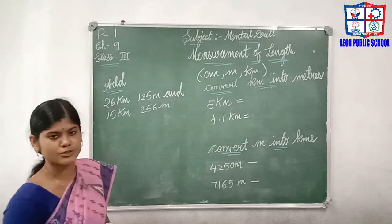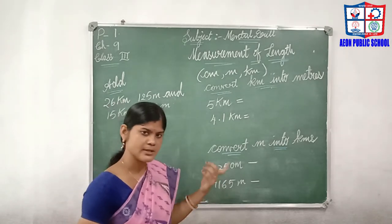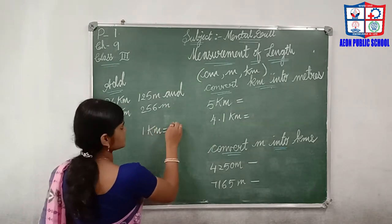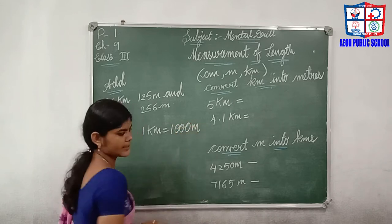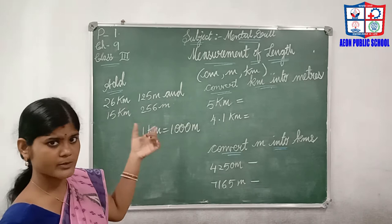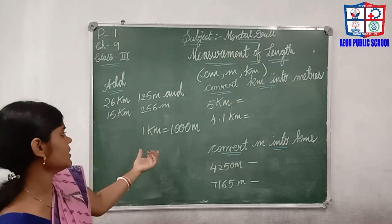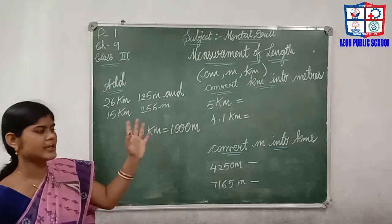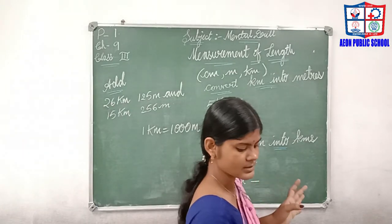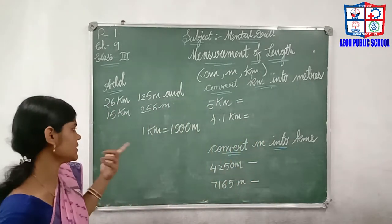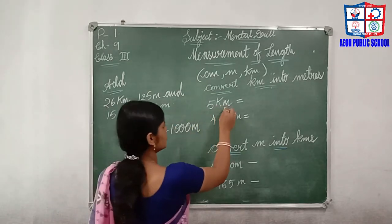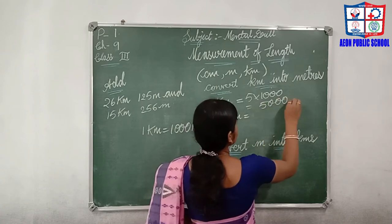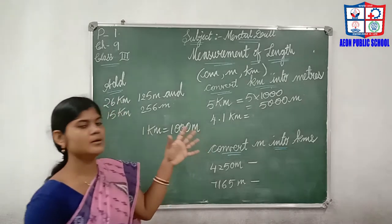Next, convert kilometers into meters. We have already seen centimeters and meters. Now for kilometers and meters: 1 kilometer equals 1000 meters. So to convert kilometers to meters, we multiply by 1000. For example, 5 kilometers means 5 × 1000 = 5000 meters.